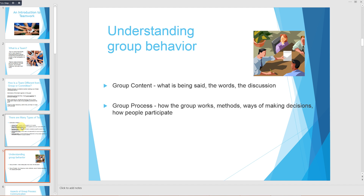Understanding group behavior involves two aspects: group content — what is being said, the words and the discussion — and the group process — how the group works, its methods, ways of making decisions, and how people participate.